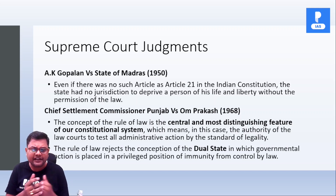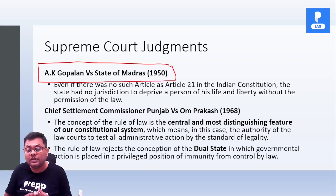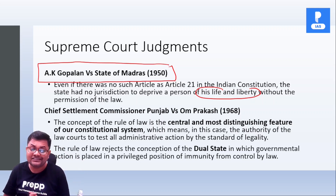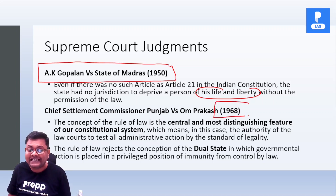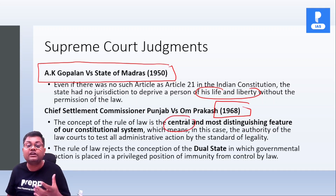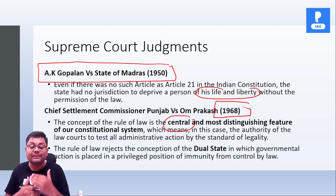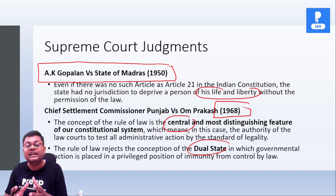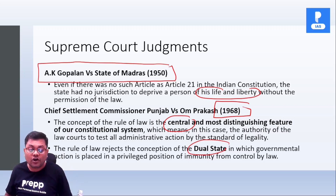So there is one famous case: A.K. Gopalan versus State of Madras, 1950. Toh there was one dissenting opinion, aur us mein judge ne ye kaha tha ki without the permission of the law, aap kisi ko bhi uski life aur liberty se deprive nahi kar sakti ho — so there has to be a law. That is rule of law. The second case is very very important: Chief Settlement Commissioner Punjab versus Om Prakash, 1968. Is case mein Supreme Court ne ye kaha ki the concept of rule of law is the central and most distinguished feature of our constitution. It is implicit under Article 14 and it rejects the conception of dual state — matlab ordinary citizens ke liye different laws aur jo government hai uske liye different laws, different privileges, aisa bilkul nahi hoga.